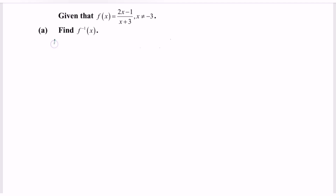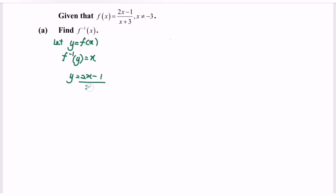Find the f inverse. Let y equals f(x), so f inverse of y equals x. So y is equal to (2x minus 1) over (x plus 3). Cross multiply: (x plus 3) multiplied by y equals 2x minus 1.